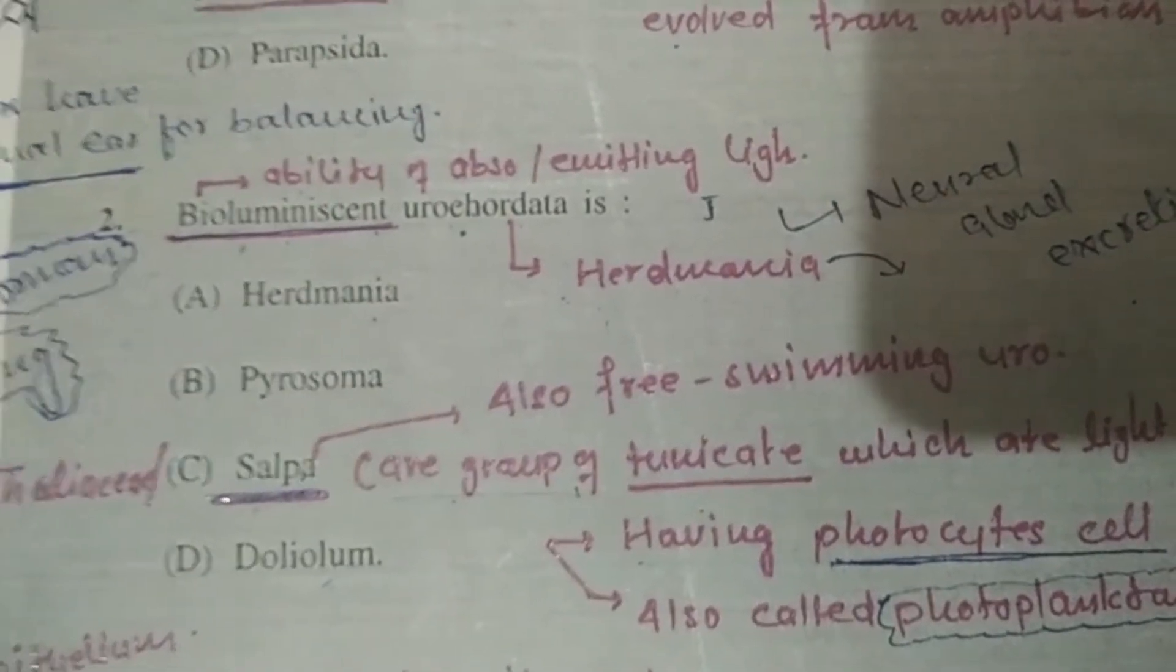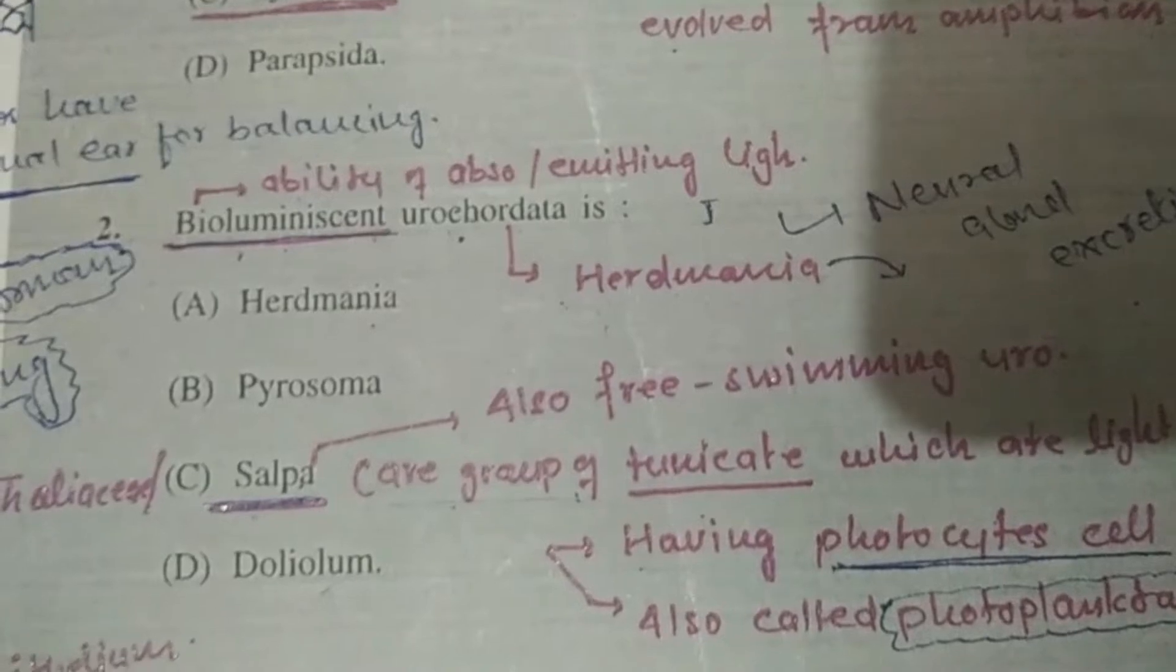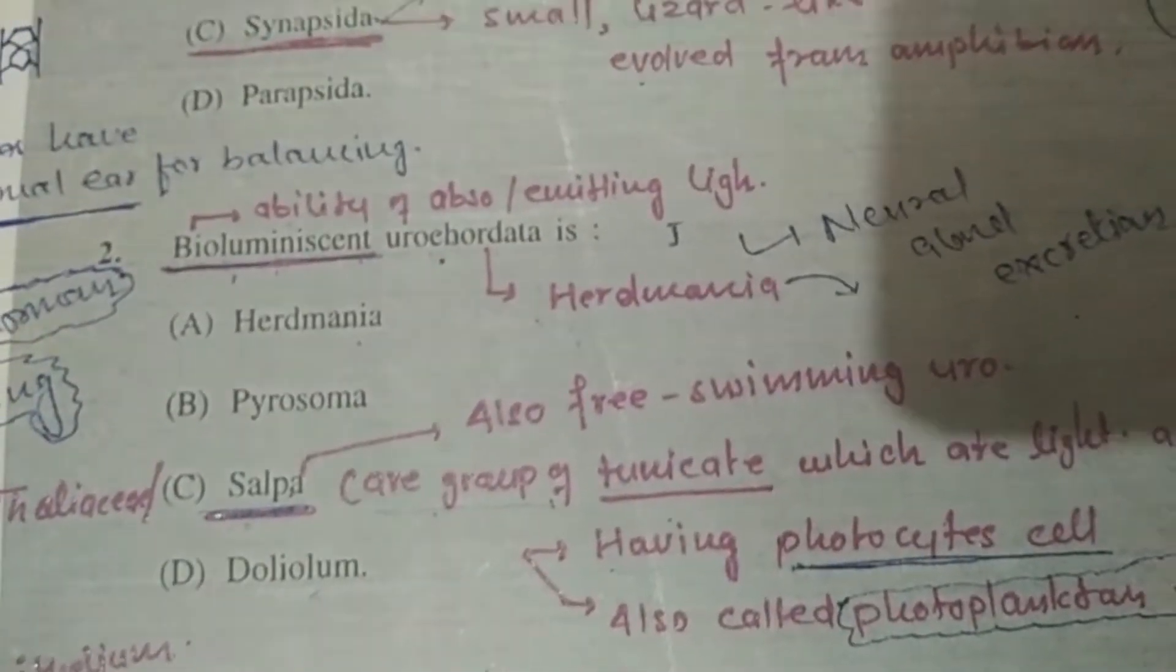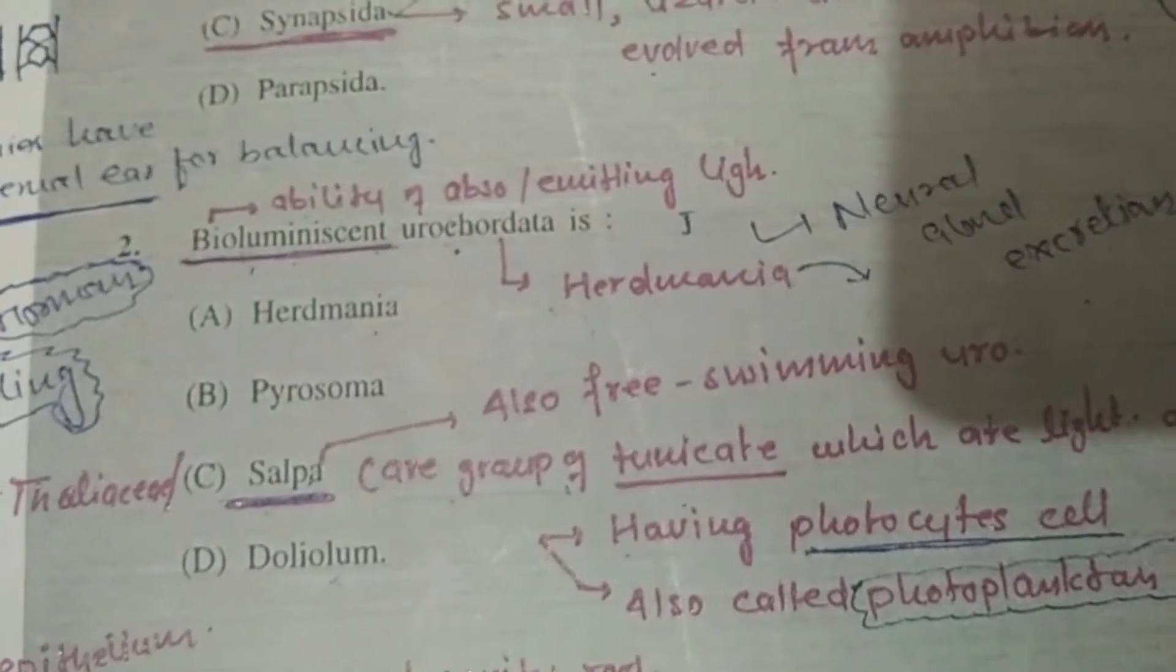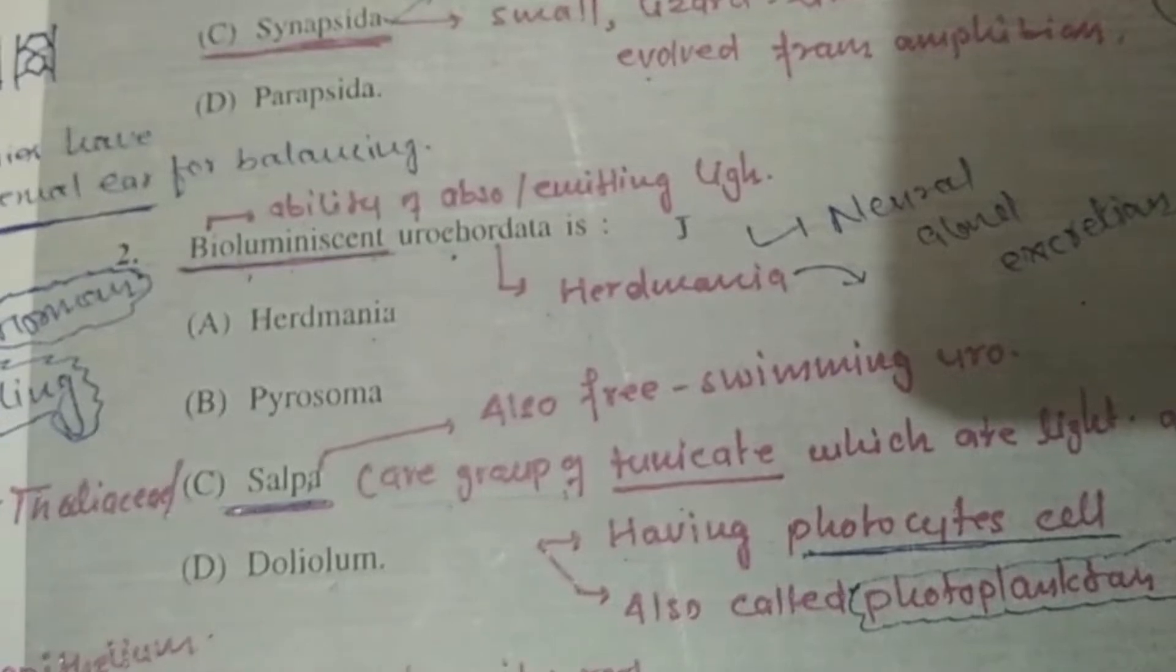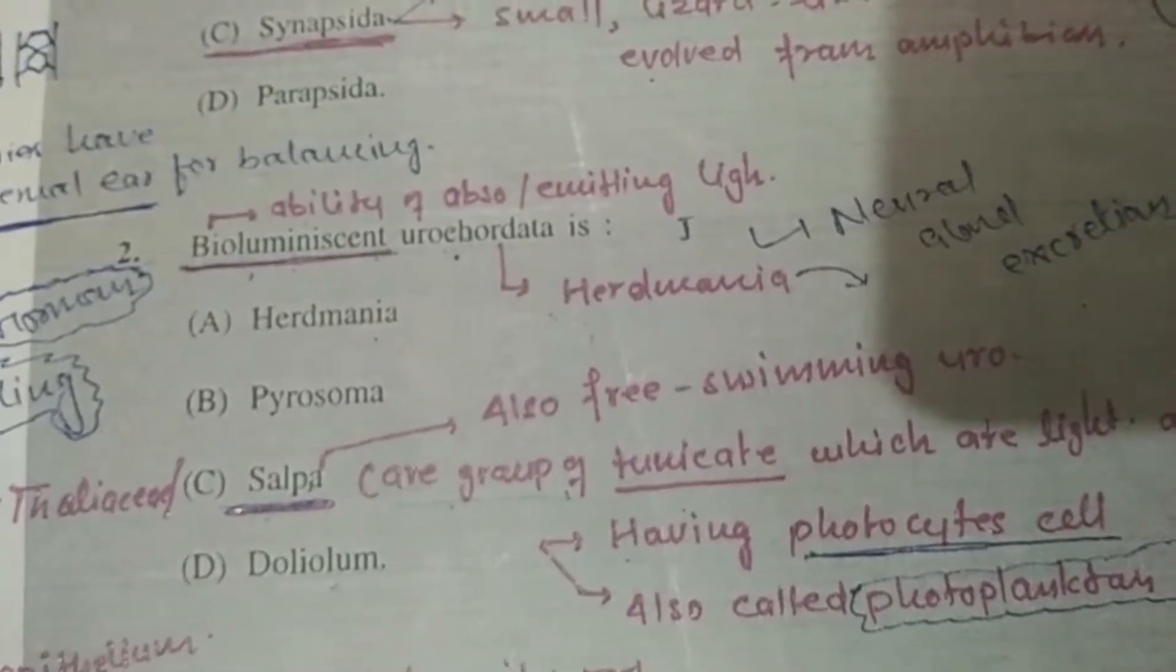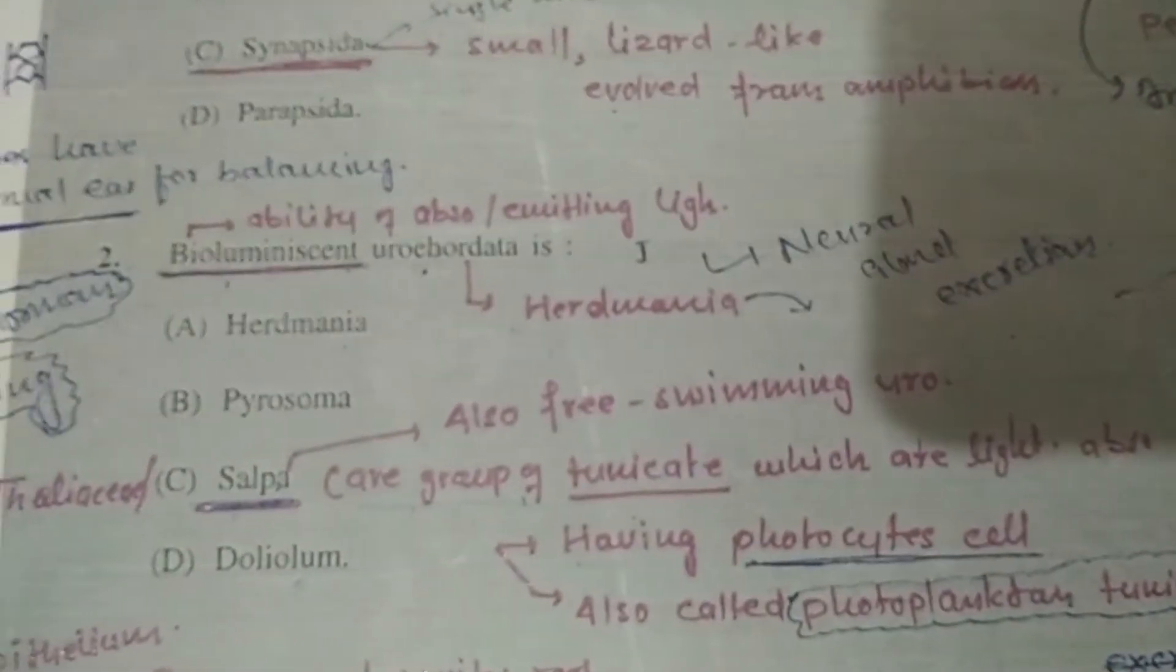Question 2: Bioluminescent urochordate is - Basically bioluminescence is the ability to absorb and emit light. Urochordate, as we know, are organisms having notochord in their larval tail. The same question was asked in 2023. We have two expected answers: option B Pyrosoma, and according to me, it is Salpa. You can search this question to get confirmation.